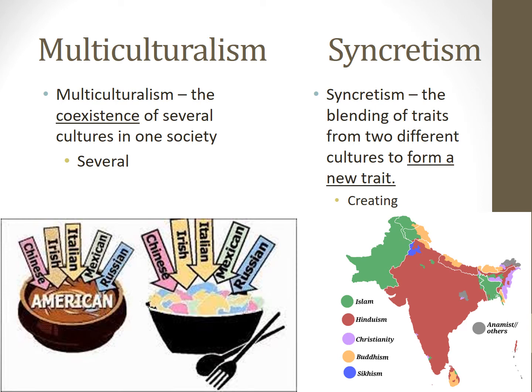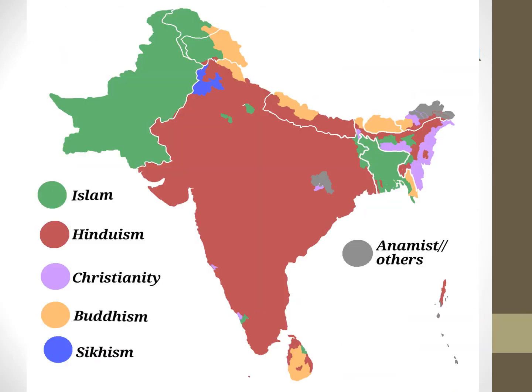Sikhism is perhaps the best example of religious syncretism. It began in the Punjab region, near the modern-day border of India and Pakistan. Scholars can see influences of Muslim saints in the Hindu Vedas in the teachings of the Sikh gurus.